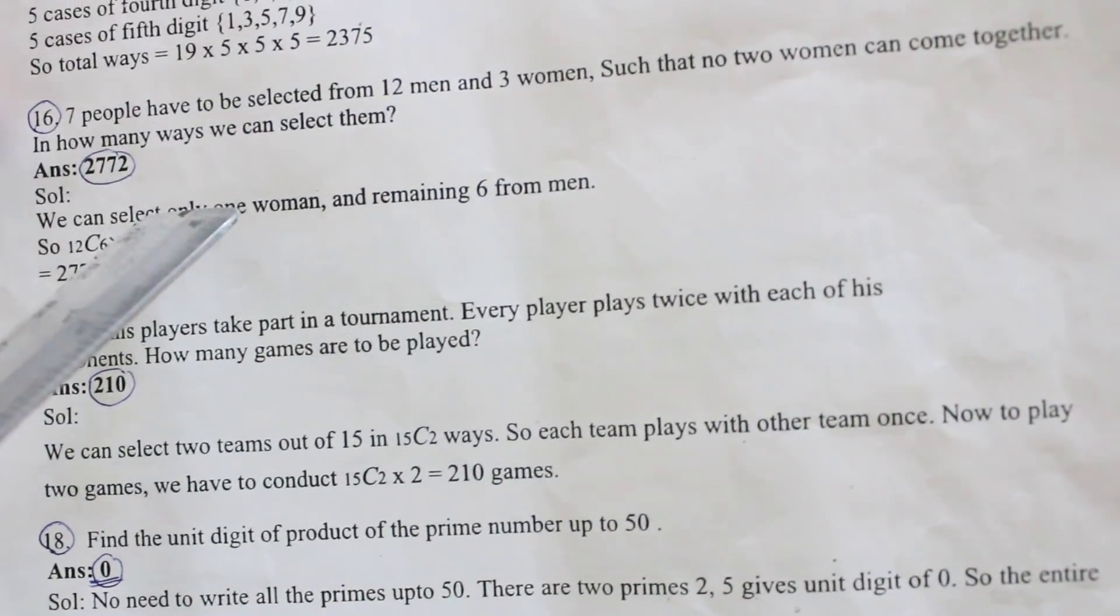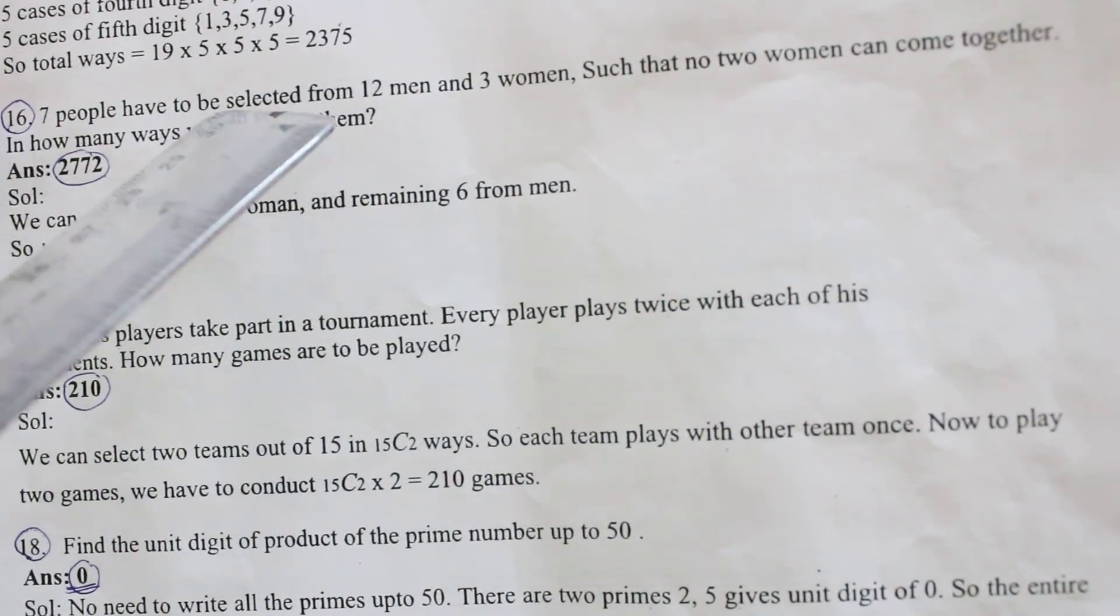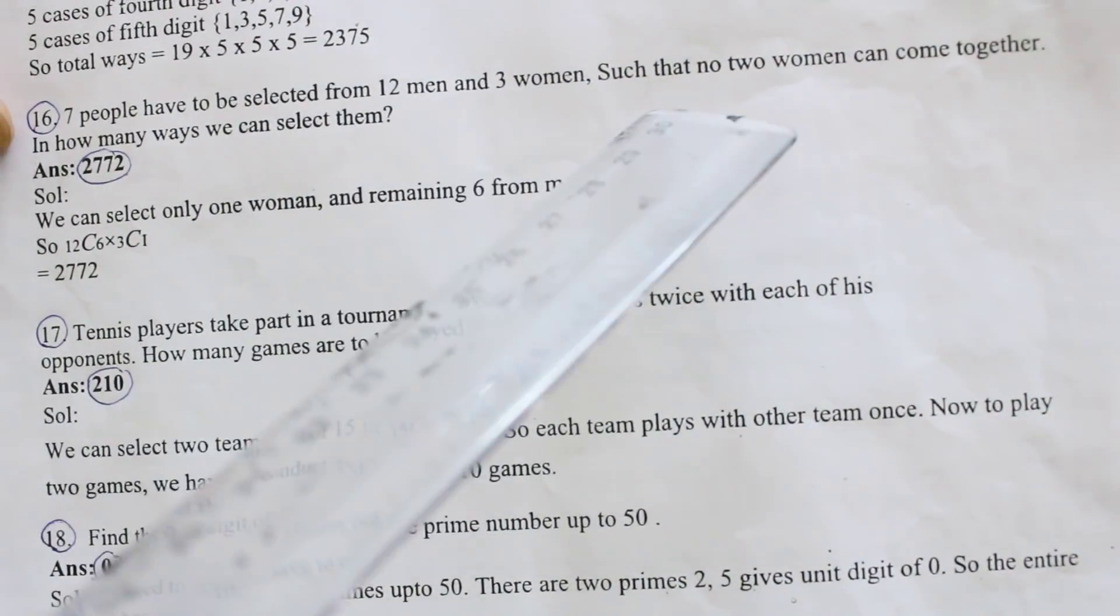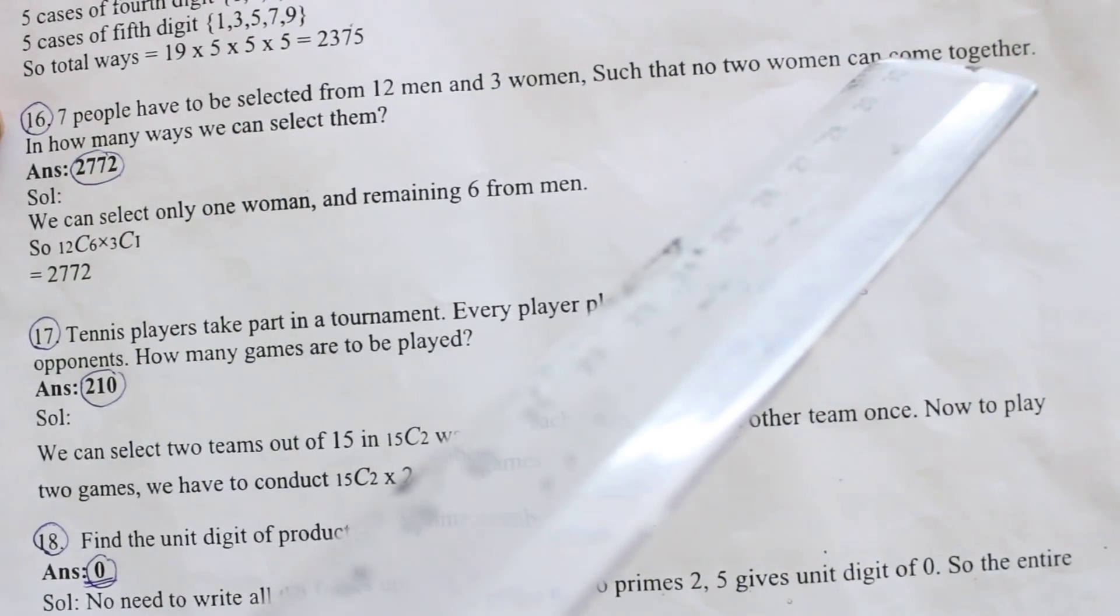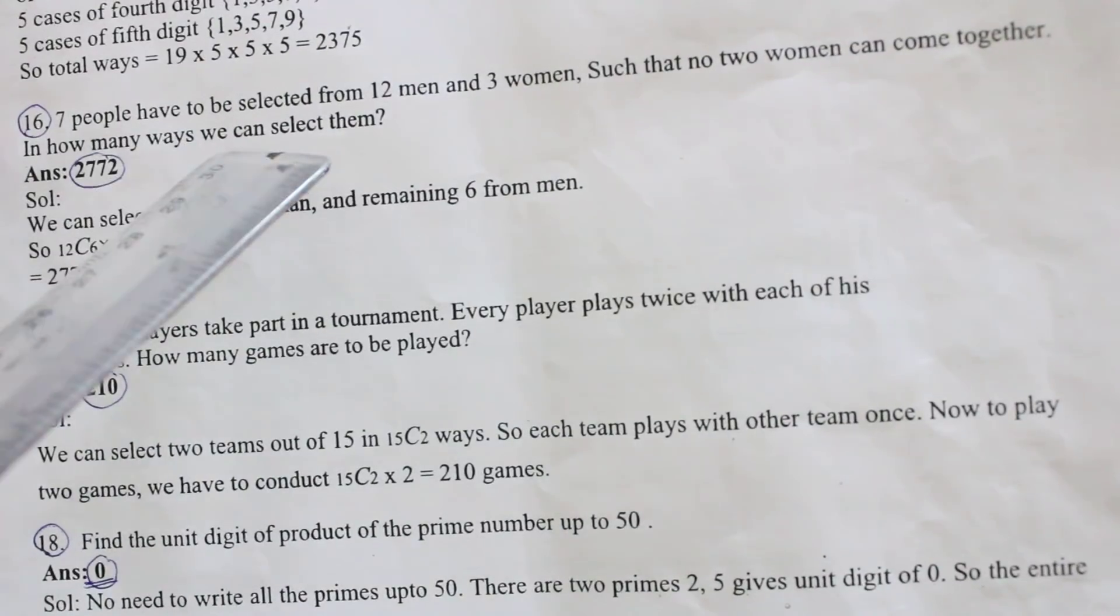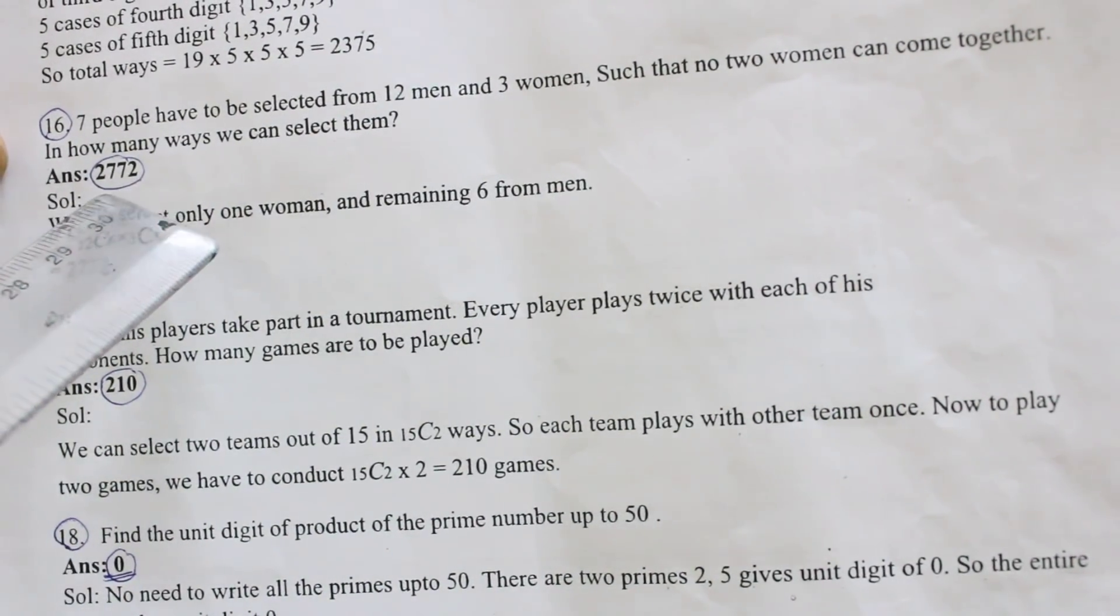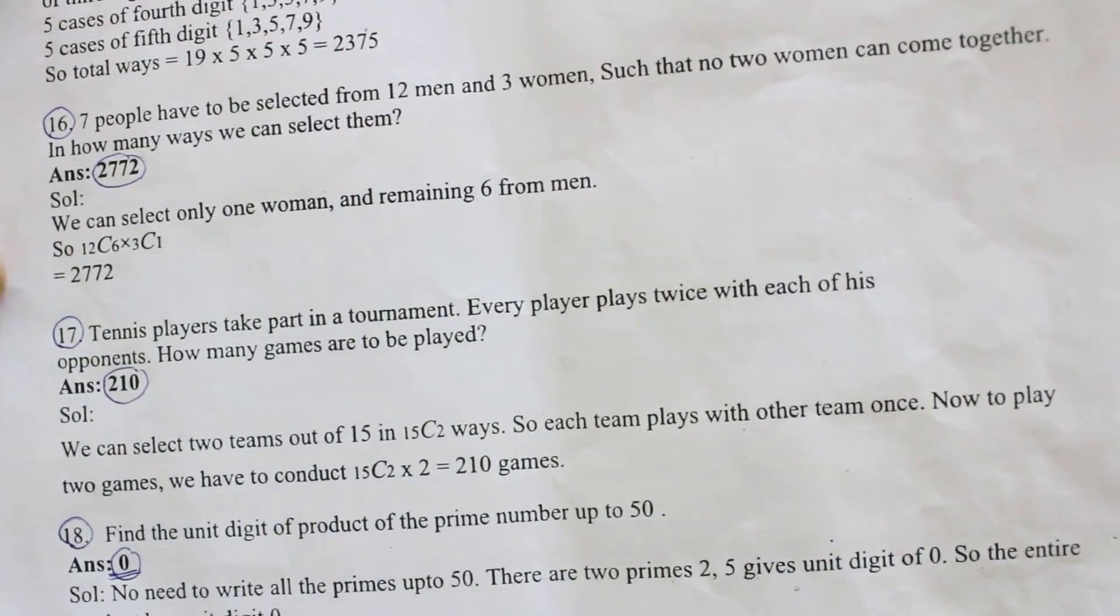16th one: 7 people have to be selected from 12 men and 3 women such that no 2 women can come together, in how many ways you can select them? Answer is 2772.